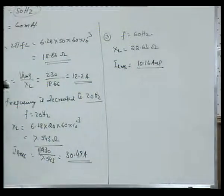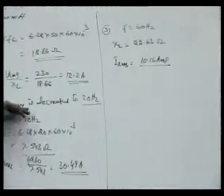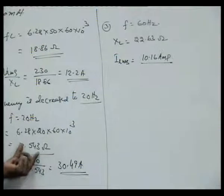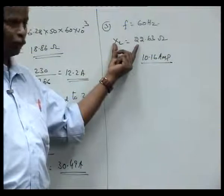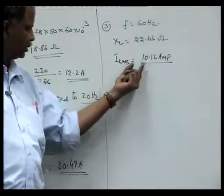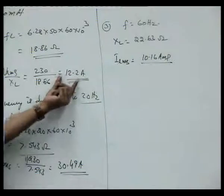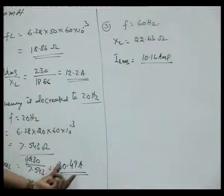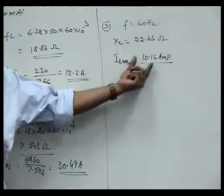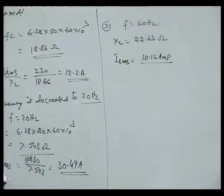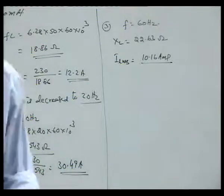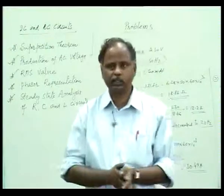This example was taken to explain the effect of frequency on current and reactance. In an inductor circuit, when frequency decreases the current increases and the reactance decreases; when frequency increases the reactance increases and therefore the current decreases. With normal frequency the current is 12.2 amperes, with decreased frequency it is 30.4 amperes, and with increased frequency it is 10.16 amperes, which is less than the standard value. Thank you.